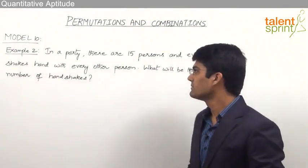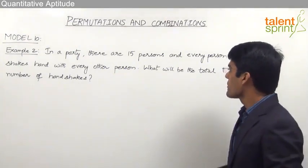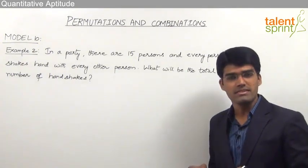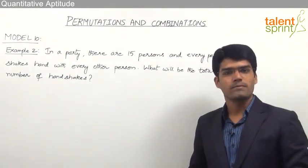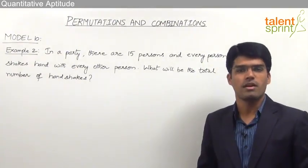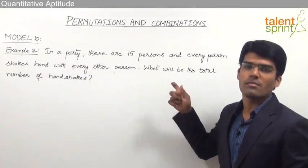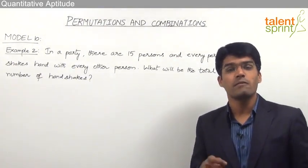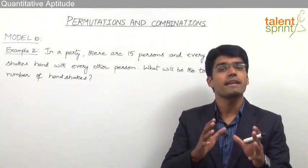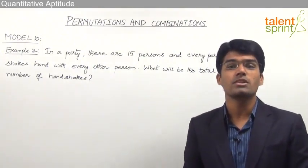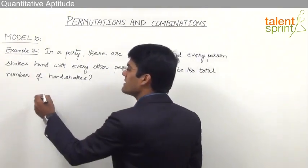The second example: in a party there are 15 persons and every person shakes hand with every other person. What will be the total number of handshakes? This is a case of combination because for one handshake we need to select two persons. So the question becomes: in how many ways can two persons be selected out of 15? Every such selection gives one handshake.